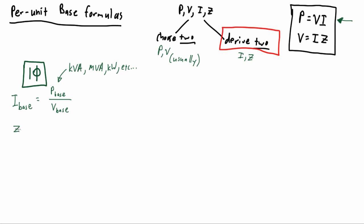Now that we've derived our current base from the chosen power base and voltage base, we move to the fourth base: impedance. With a derived current base, we can use the chosen voltage base to come up with our impedance base—a very simple application of the V equals IZ formula.